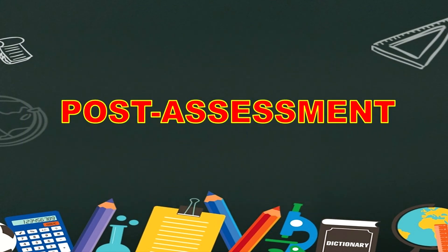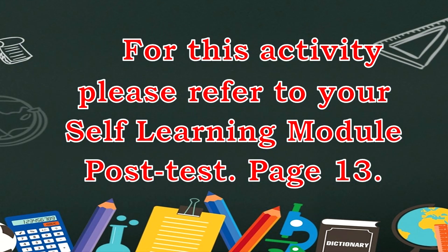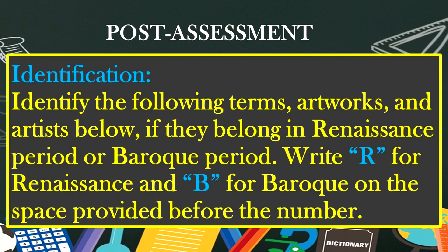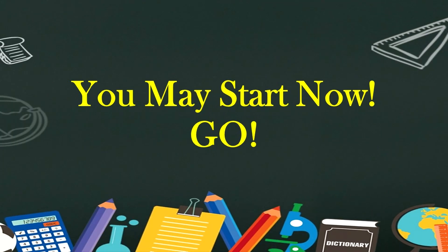Now let us answer the assessment. Are you ready? Then let's keep going! For this activity, please refer to your self-learning module post-test on page 13. Post-assessment — Identification: Identify the following terms, artworks, and artists below if they belong to the Renaissance Period or Baroque Period. Write R for Renaissance and B for Baroque on the space provided before the number. You may start now. Go!